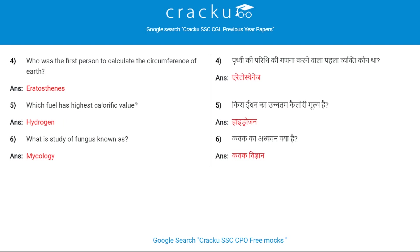One of the main reasons for depletion of the ozone layer in the earth's atmosphere is CFCs and Halons. Who was the first person to calculate the circumference of the earth? Eratosthenes. Which fuel has the highest calorific value? Hydrogen.